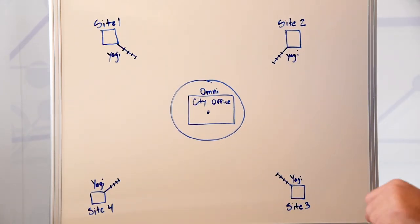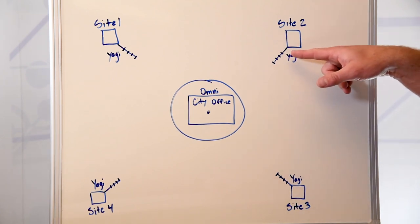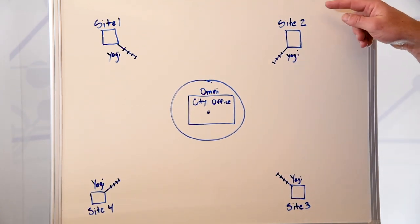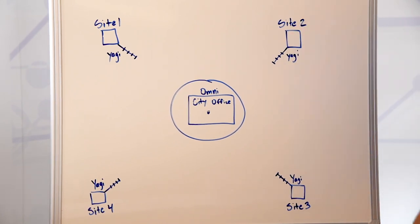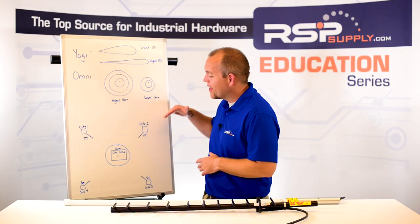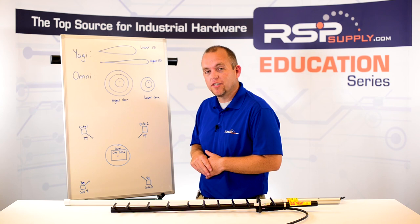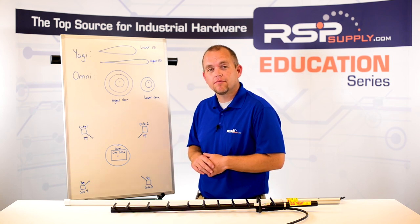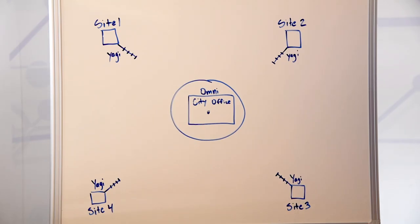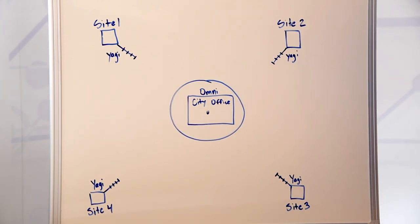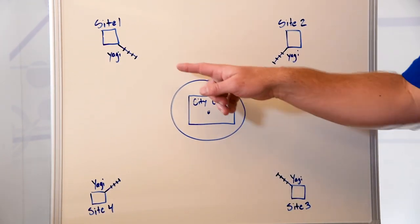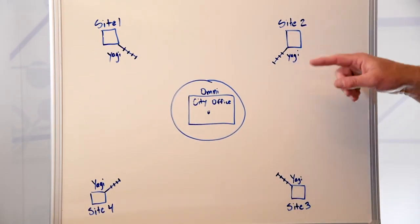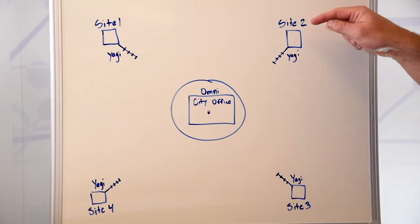In regards to the remote sites, where they are located a farther distance from the city office, it would make sense for us to use a Yagi antenna due to the fact that they can communicate at a greater distance. Also, they only need to communicate in one direction — in this case, to the city office. So at each remote site, we would use a Yagi antenna to communicate with the city office. The city office would use an Omni antenna so that it can send and receive data from all the different remote sites.